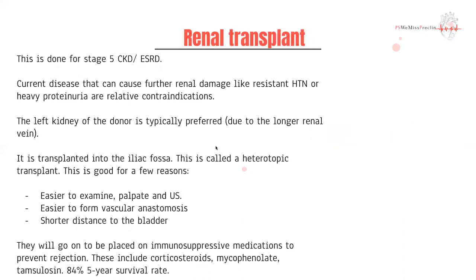Renal transplants are done almost exclusively for stage 5 CKD. The general transition is hemodialysis or peritoneal dialysis first, and if nothing else has helped and the patient is suitable for transplant, you might proceed. Suitability depends on how much we can add to their quality of life, since kidneys are a rare organ. We weigh quality of life and ensure criteria are met including age, BMI, and history of past infections. The patient should not have conditions that would worsen the kidney, so resistant hypertension and heavy proteinuria are relative contraindications.